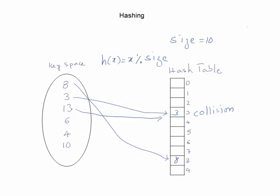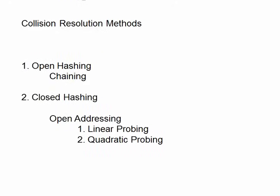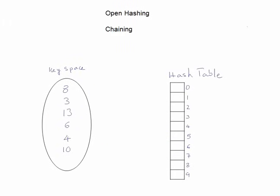When we compute 13 mod 10, we also get 3 — this is a collision. When we change the hash function, there is a possibility that two or more elements are mapped to the same index, and that is called a collision. We have to resolve this collision. There are different methods: open hashing (which includes chaining) and closed hashing (which includes linear probing and quadratic probing). Let us look at them one by one.